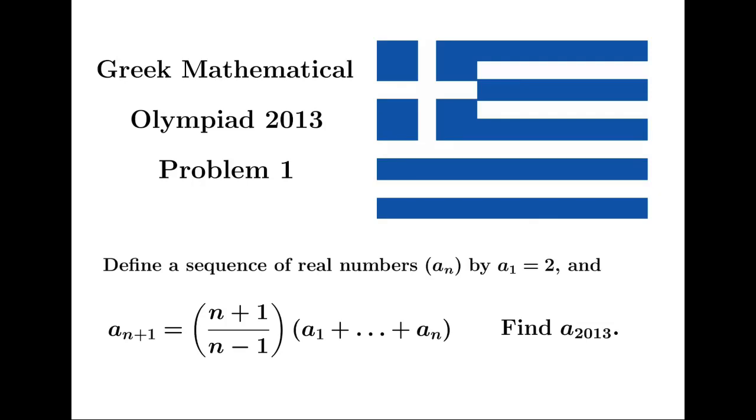Let's take a look at this problem taken from the Greek Mathematical Olympiad 2013. It says define the sequence of real numbers a_n by the first term equal to 2, and that for the following terms a_{n+1} equals the sum of a_1 plus a_2 all the way adding to a_n times (n+1) over (n-1). We have to find the 2013 term.